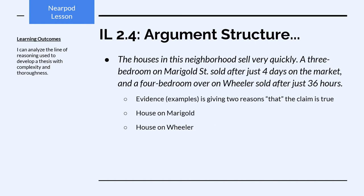But looking at the second sample argument — the houses in this neighborhood sell very quickly; a three-bedroom on Marigold Street sold after just four days; a four-bedroom on Wheeler sold after 36 hours — those examples give reasons that the claim is true. The house on Marigold sold this fast; the house on Wheeler sold this fast. Those are each examples that demonstrate the claim is true.